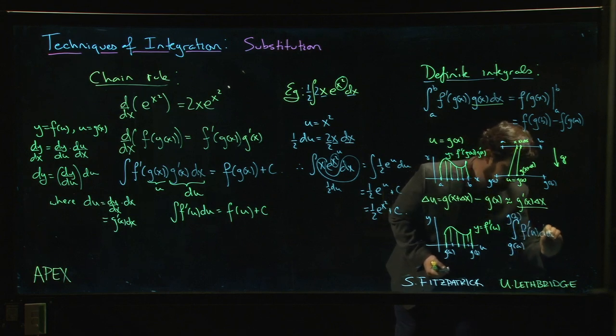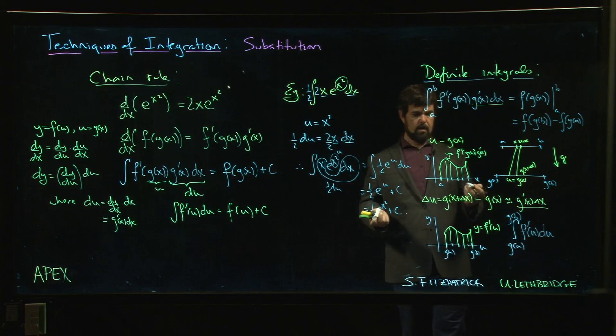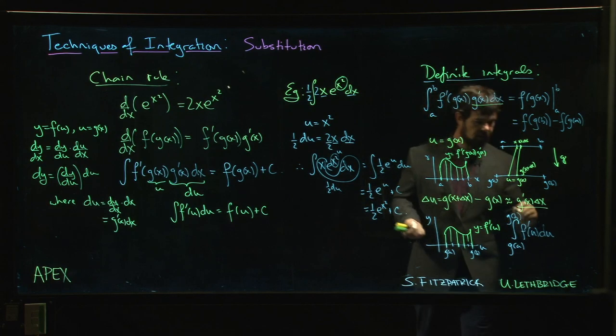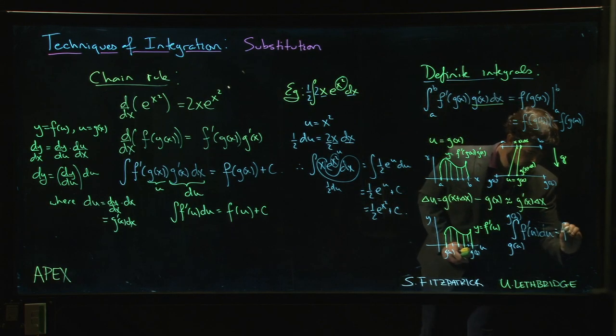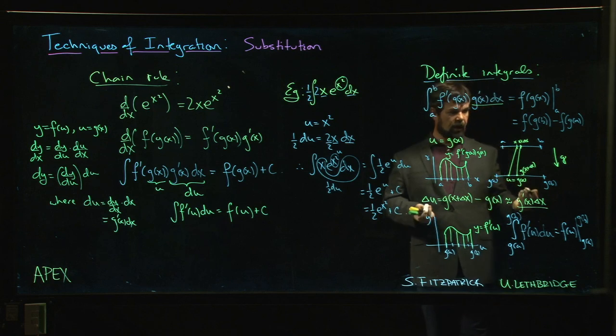Of f prime of u, right? And what does that give you? Well, that gives you f of u evaluated from G of a to G of b, and when you plug in the endpoints, of course you get f at G of b minus f at G of a, same as before.